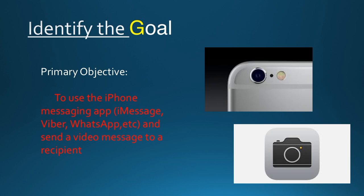We first identify a goal — the primary objective of the task — which is to use the phone messaging app and send a video message to a recipient. In this case, we can use any type of messaging app such as iMessage, Viber, or WhatsApp.